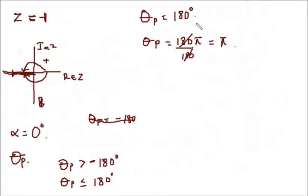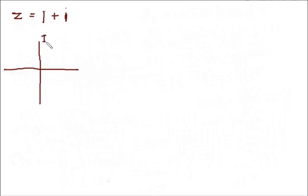Let's take another example. Say we have z equal to 1 plus i. We first draw our Argand diagram. The imaginary part of z is here and the real part of z is here. The real part, 1, should fall around here, and the imaginary part, 1, should fall around here. The intersection point gives us our complex number.